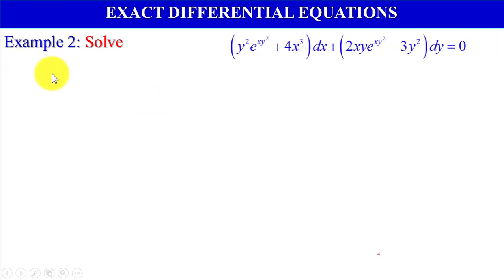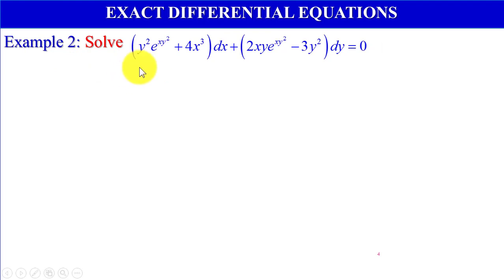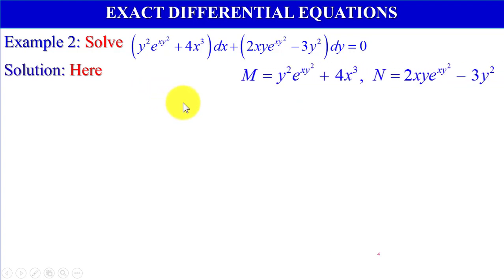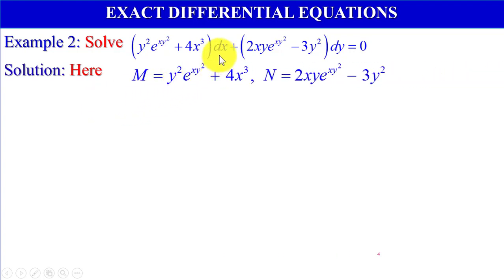Example 2: Solve y squared times e to the power xy squared plus 4x cubed dx plus 2xy e to the power xy squared minus 3y squared dy equals 0. Here M equals y squared e to the power xy squared plus 4x cubed and N equals 2xy e to the power xy squared minus 3y squared.